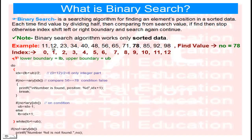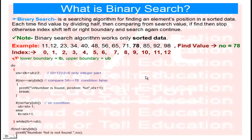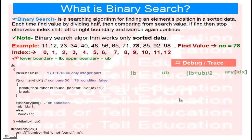In our example we have the numbers: 11, 12, 23, 34, 40, 48, 56, 65, 71, 78, 85, 92, 98 — total 13 elements. We need to find 78. The index starts from 0, so indices go 0 through 12. The value 78 is at index 9, so the output is index 9.